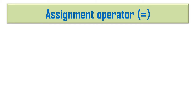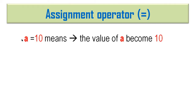Let us use the equal to symbol in an application, for instance. We will consider a single equal to symbol — the assignment operator. That is, if we type a = 10, then a is assigned 10. That means the value of a becomes 10.